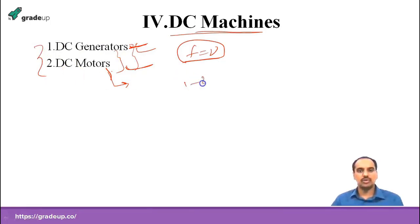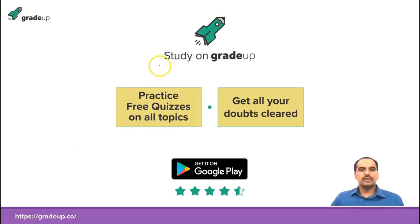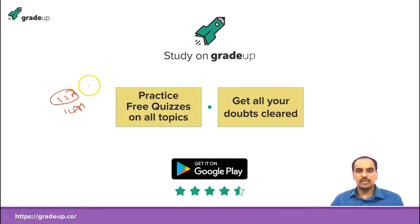From DC machines, at least we can get one two-mark question, otherwise one one-mark question — minimum one mark and maximum two marks. Overall in the machines topic, we can expect a minimum of two marks every year. They have asked two marks in every paper — looking at previous year papers like 2017, 2016, 2015, in every paper they ask two marks from machines.